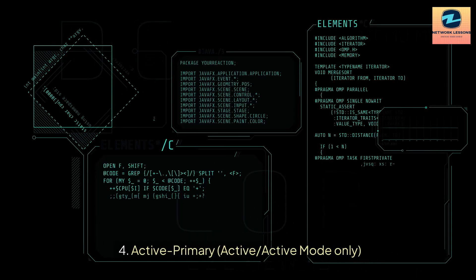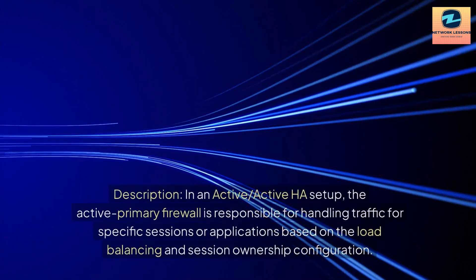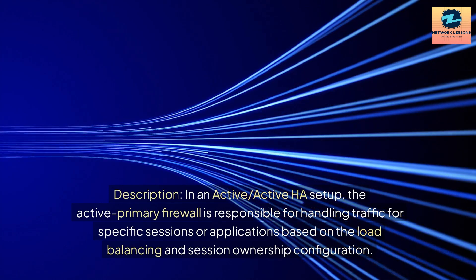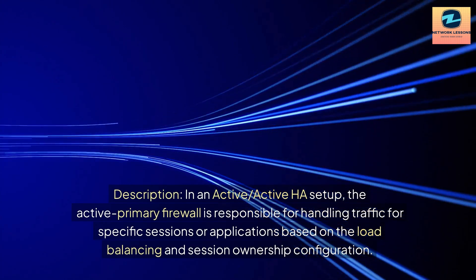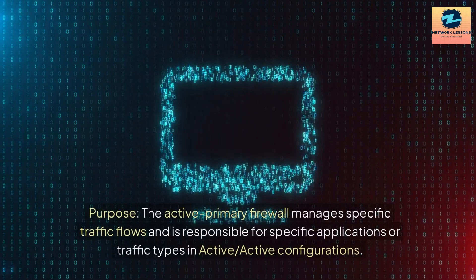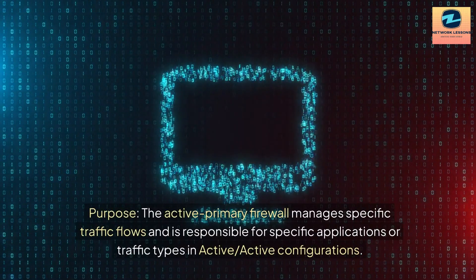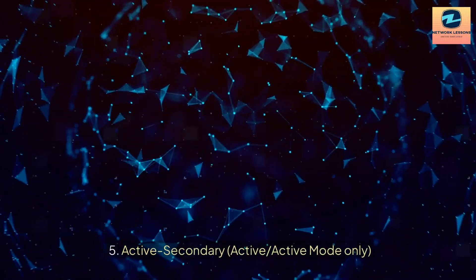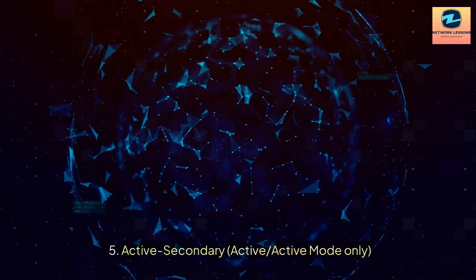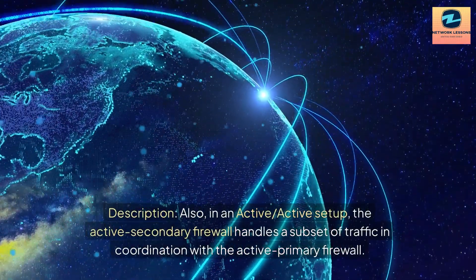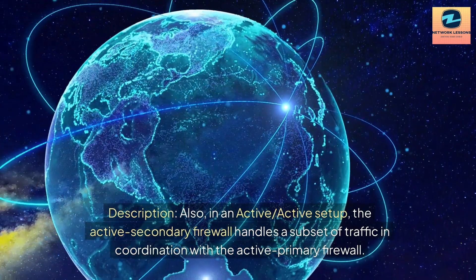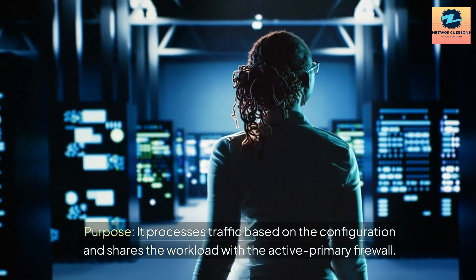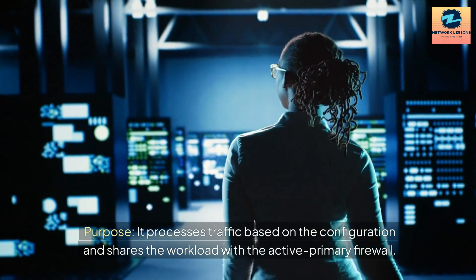4. Active Primary (Active-Active Mode Only): In an active-active HA setup, the active primary firewall is responsible for handling traffic for specific sessions or applications based on the load balancing and session ownership configuration. It manages specific traffic flows and is responsible for specific applications or traffic types. 5. Active Secondary (Active-Active Mode Only): Also in an active-active setup, the active secondary firewall handles a subset of traffic in coordination with the active primary firewall, processing traffic based on the configuration and sharing the workload with the active primary firewall.